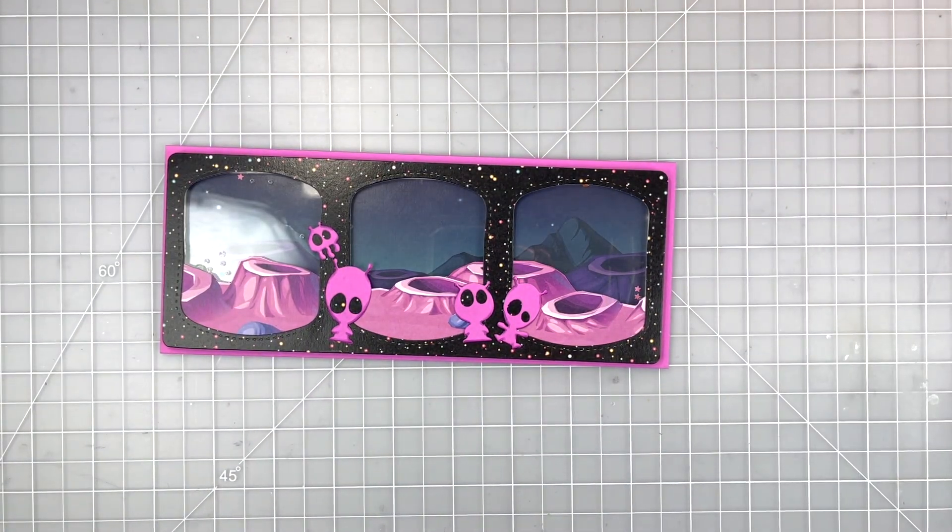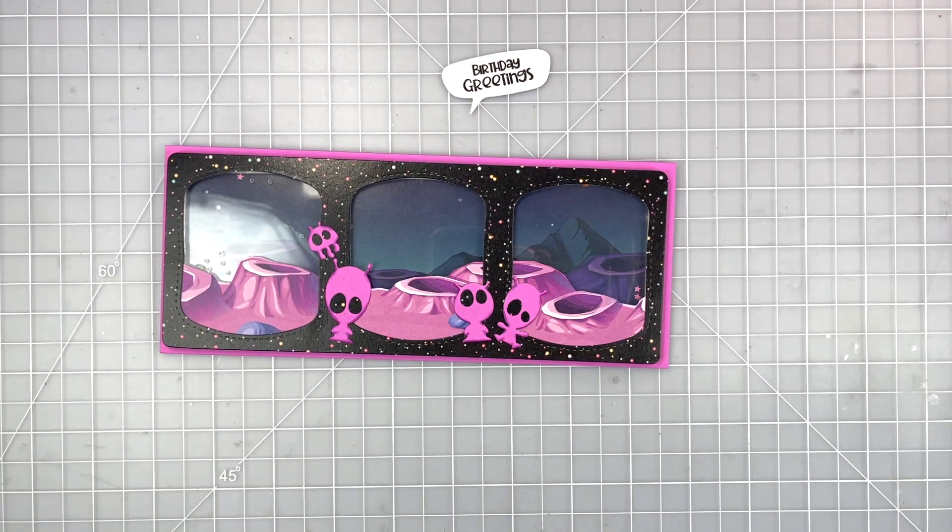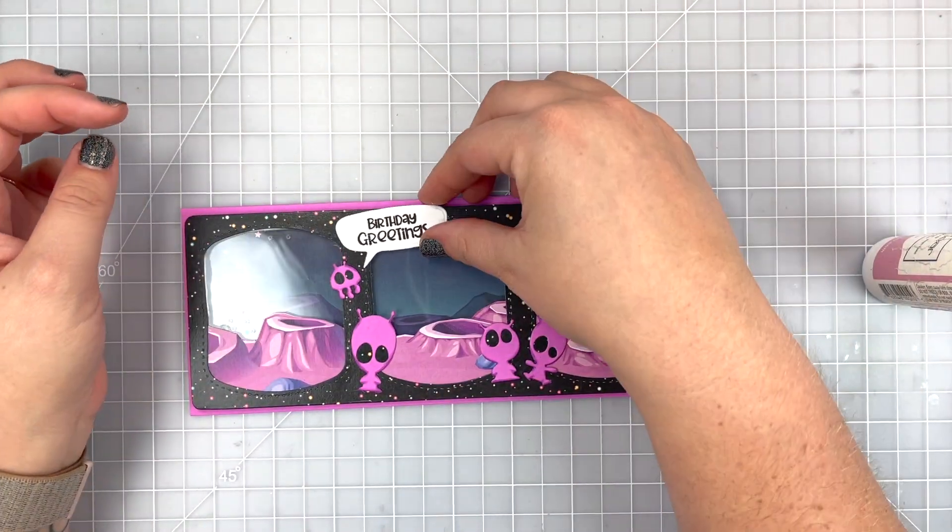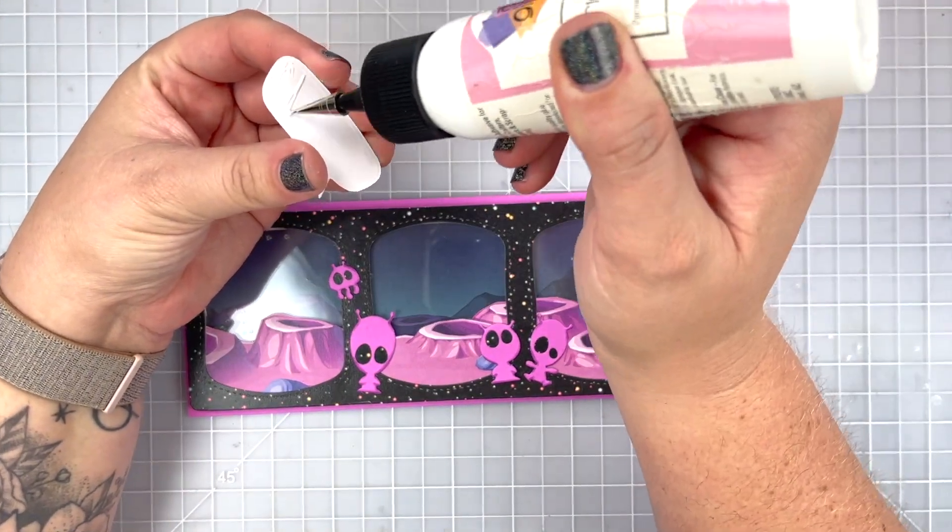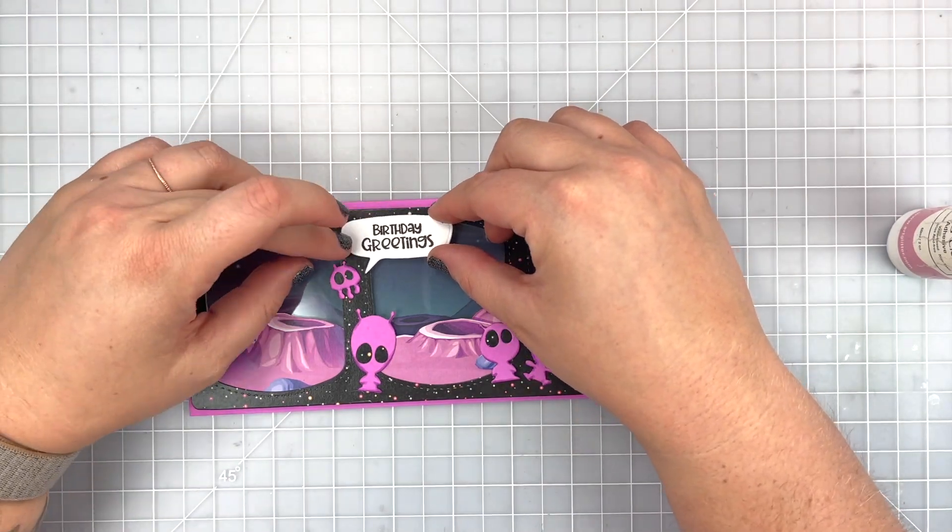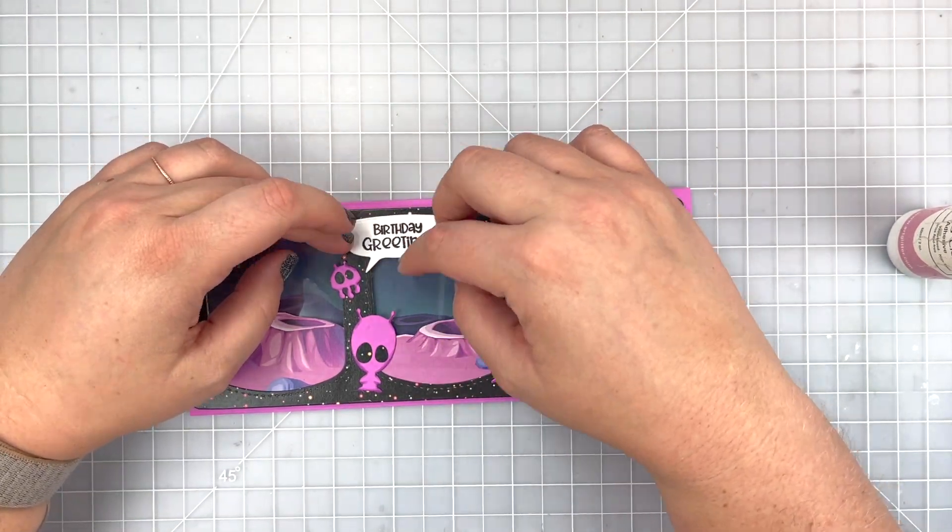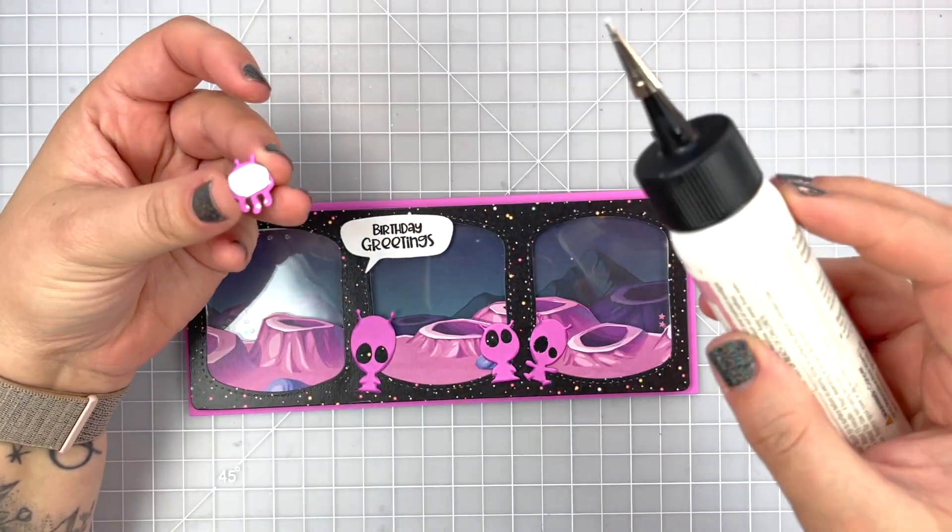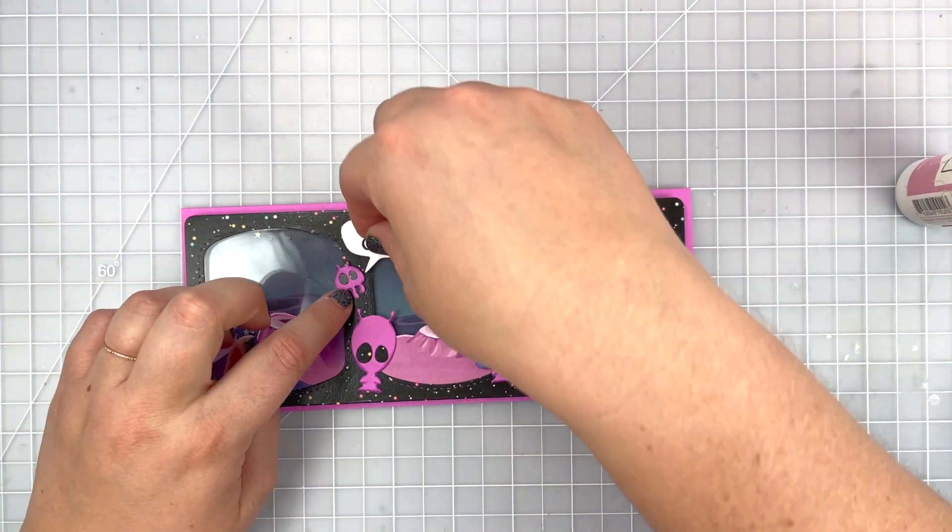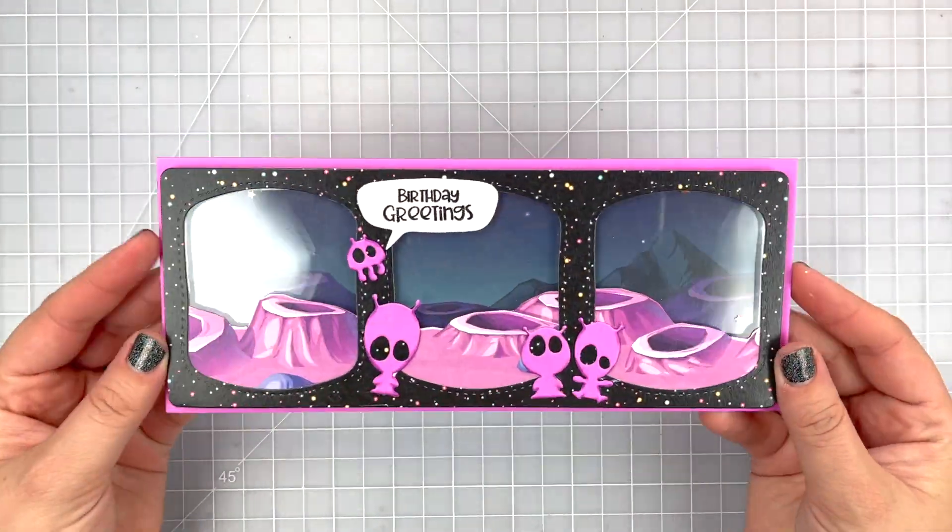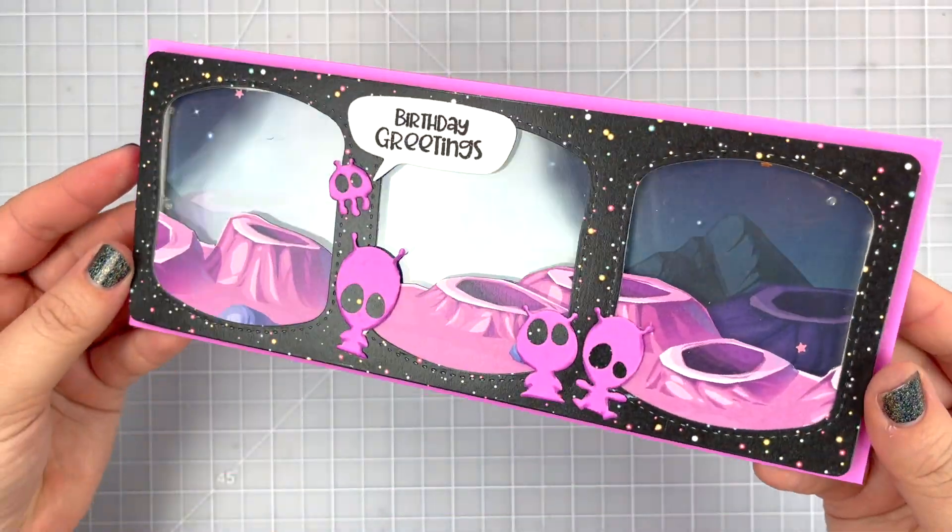I went ahead and die cut it out of white paper and stamped it in some black ink. Now I'm just going to use my wet glue to adhere that down to my card. Because I have acetate, I just want to make sure it's nice and secure. Then I'm going to glue the rest of my aliens down, just adding a little bit of wet glue and putting them back right where I had planned to put them. There we go - our finished card.